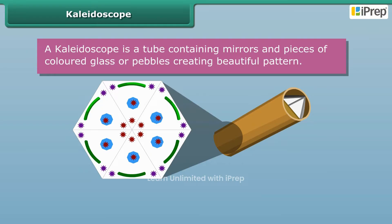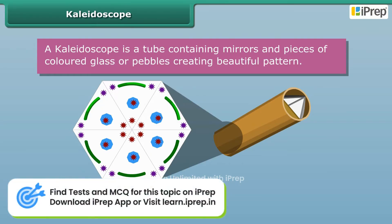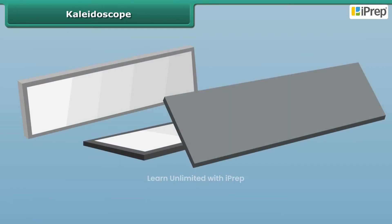Let us perform an activity to make a kaleidoscope. Get three strips of plain mirrors and join them together to form a prism.